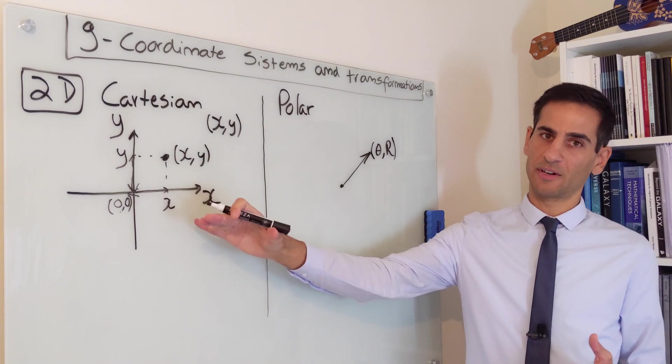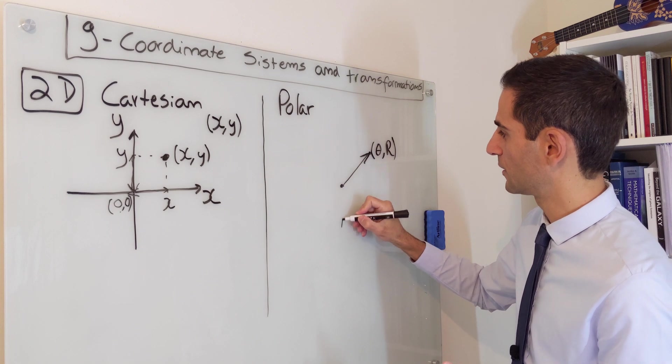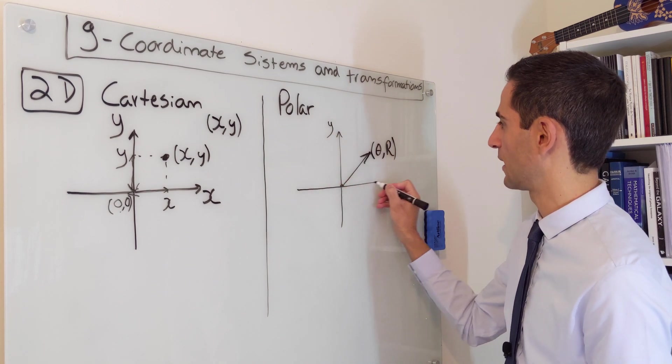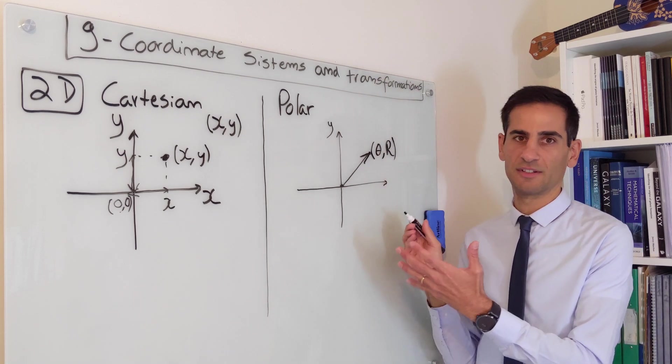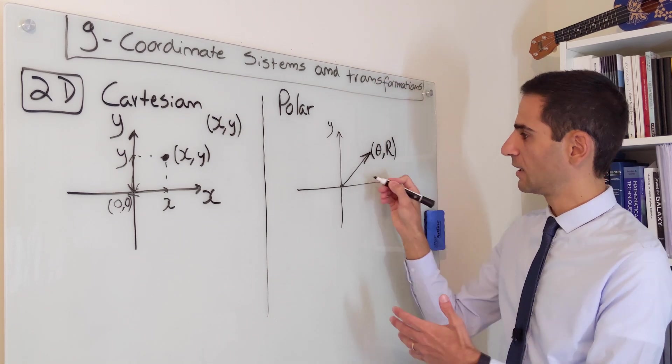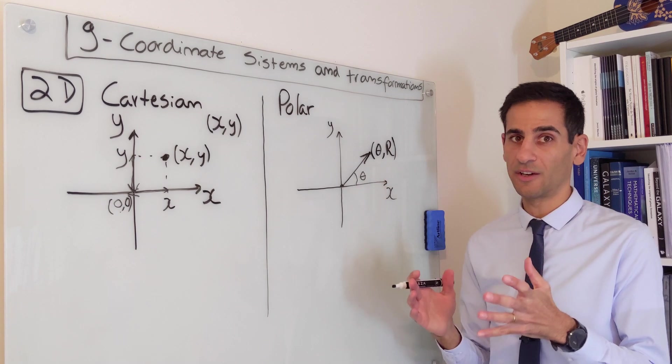If you are to compare it with Cartesian coordinates, we can draw it like this. This would be the y-axis and the x-axis. I'm doing it just so it's easier to define what we mean by theta.